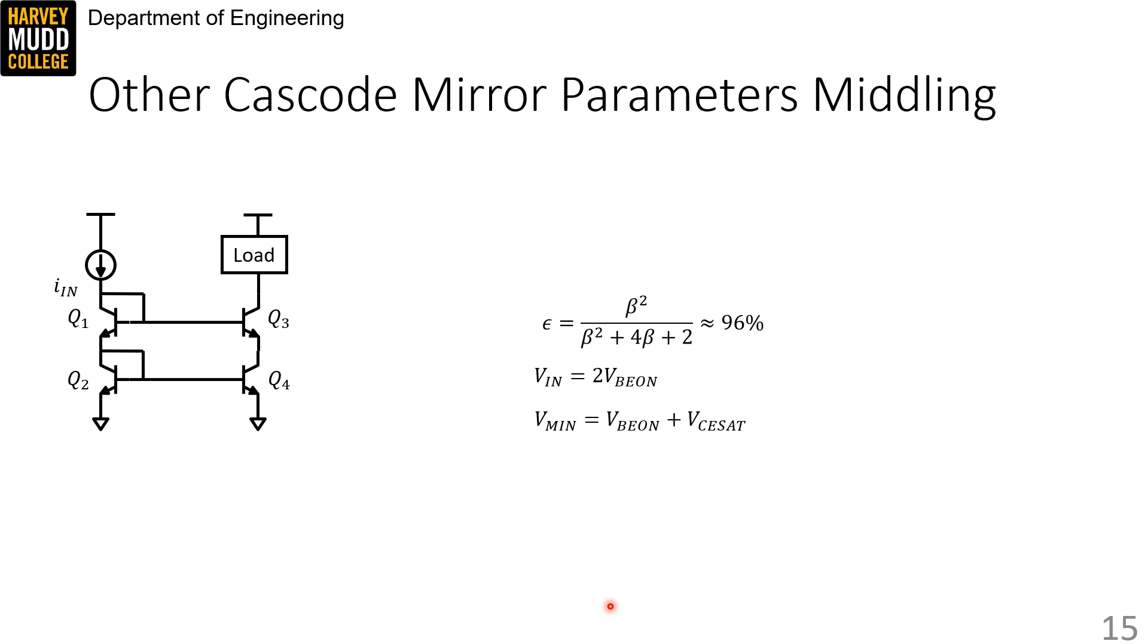Cascode mirrors also have an epsilon that I've just included on this slide. It's worth noting that the error is pretty middling. The other cascode amplifiers are easier to find. V in is determined by keeping both Q1 and Q2 in forward active. So, you need a VBE on to reach this node, and then an additional VBE on to reach this node, meaning V in is 2 VBE on.